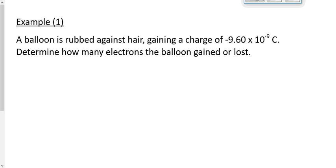Let's have a quick look at one example. A balloon is rubbed against hair and it gains a charge of negative 9.6 times 10 to the minus 19 coulombs. Don't worry about how it gains that charge right now. It was neutral, now it's not. We want to know how many electrons the balloon has gained or lost. Tell me whether it's electrons that have been gained or lost. It's become negative, so it must have more electrons than protons — therefore it must have gained electrons. If it lost electrons, it would have more protons than electrons.